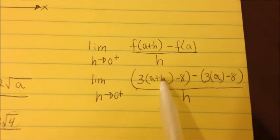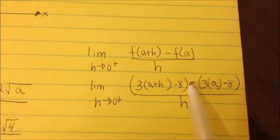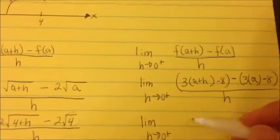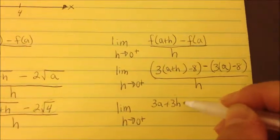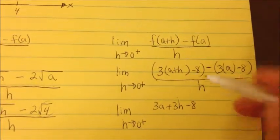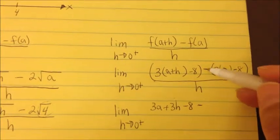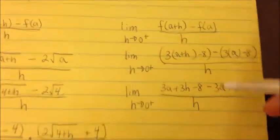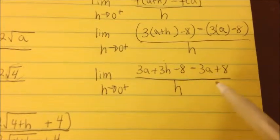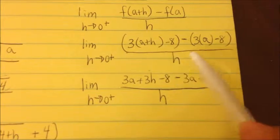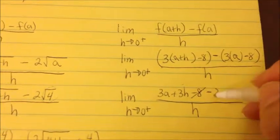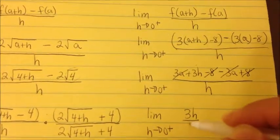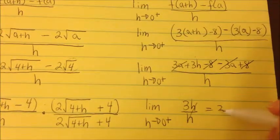Distributing 3 into the first parentheses gives 3a plus 3h minus 8. Then distributing the negative into the second part gives minus 3a plus 8, all over h. The 8s cancel and the 3a's cancel. You're left with the limit as h approaches 0 from the right of 3h over h. The h's cancel, giving a final answer of 3 — that's the slope of the right-hand side equation.